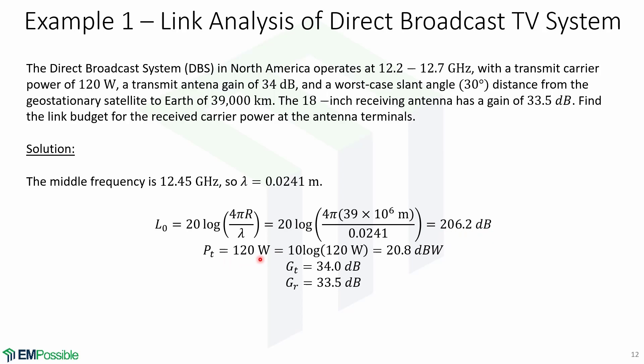The transmitted power is 120 watts. Converting that to dB, 10 log(120 watts) equals 20.8 dBW. The gain GT is 34 dB and GR is 33.5 dB.